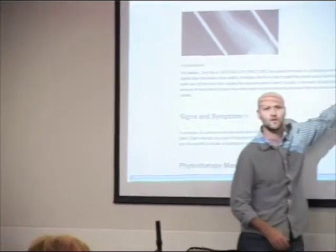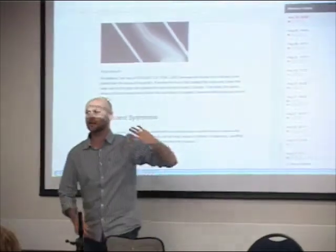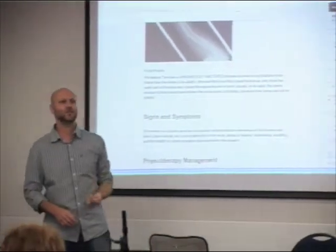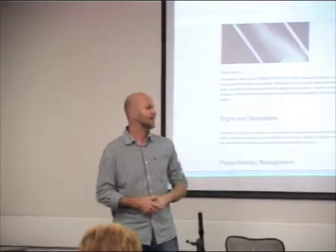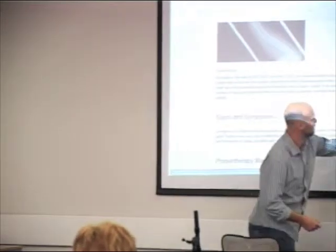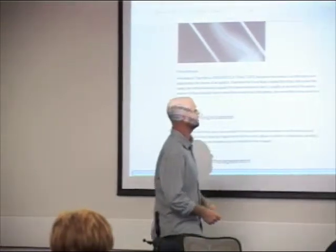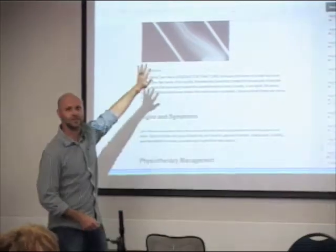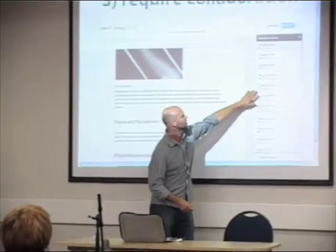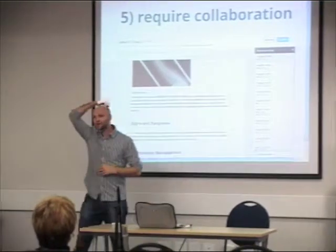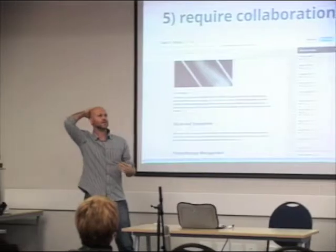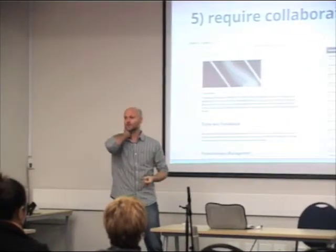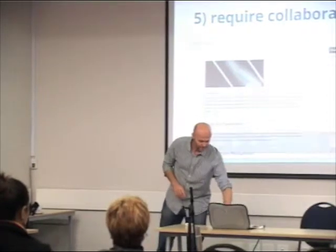Each one of these colors represents a different student in the revision history. You can click on one and see everything that student did on that document — the tracking in Google Docs is pretty good. You can see who made what changes over time, with time and date stamps. We could go back at the end of a case and say, who are the students who contributed to this document, and did they contribute in a meaningful way?